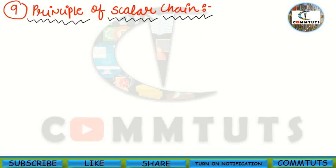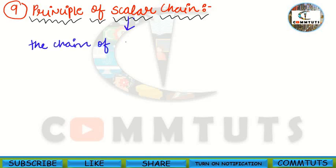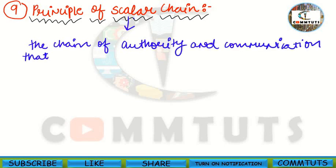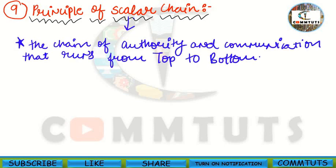First, let us understand what scalar chain means. Scalar chain refers to the chain of authority and communication that runs from top to bottom. This principle says that communication should move from top to bottom — from the highest rank to the lowest rank — or vice versa.